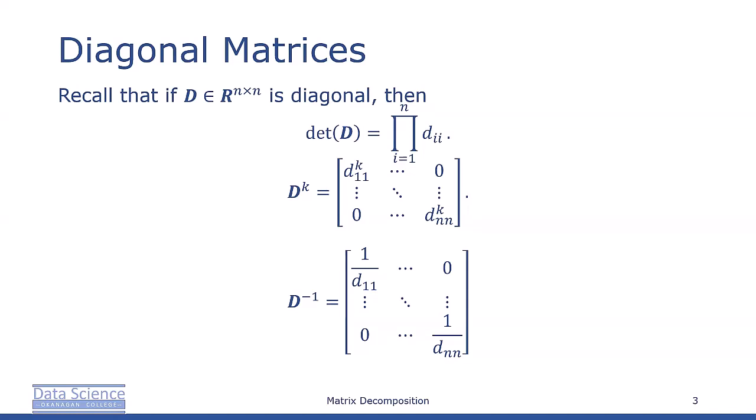To find the inverse, we simply take the reciprocal of all the elements on the main diagonal. And it's these simple applications that we want to take advantage of when we find diagonal matrices.